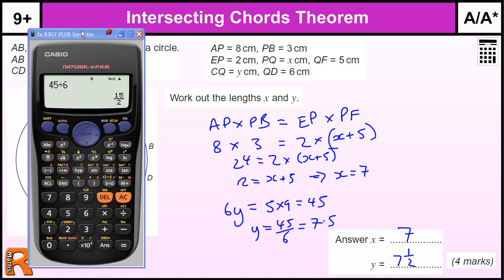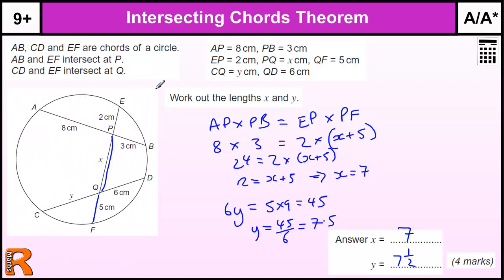A couple of mistakes people make, apart from not knowing this formula at all, because you do have to memorize it, it's not given to you. Once you work out x, make sure you don't use x plus 5 times 2 again. You actually change this to be x, which is 7, plus 2, which is 9, times by 5, because the actual where it crosses is changed in the second part.